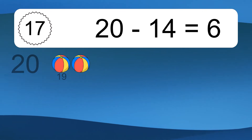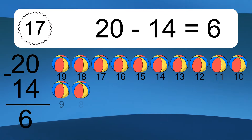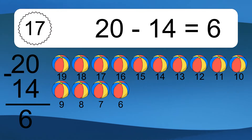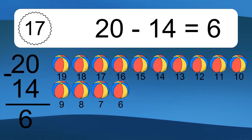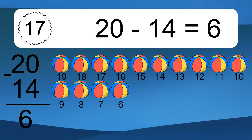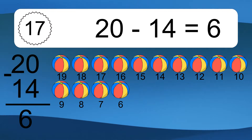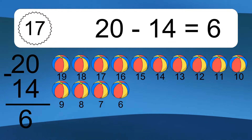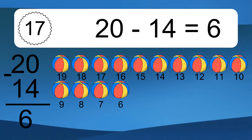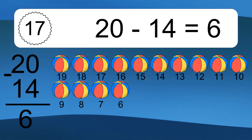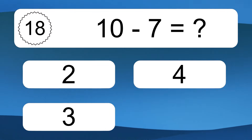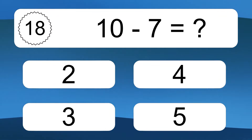20 minus 14 equals 6. Let's count it: 19, 18, 17, 16, 15, 14, 13, 12, 11, 10, 9, 8, 7, 6. 10 minus 7 equals what?